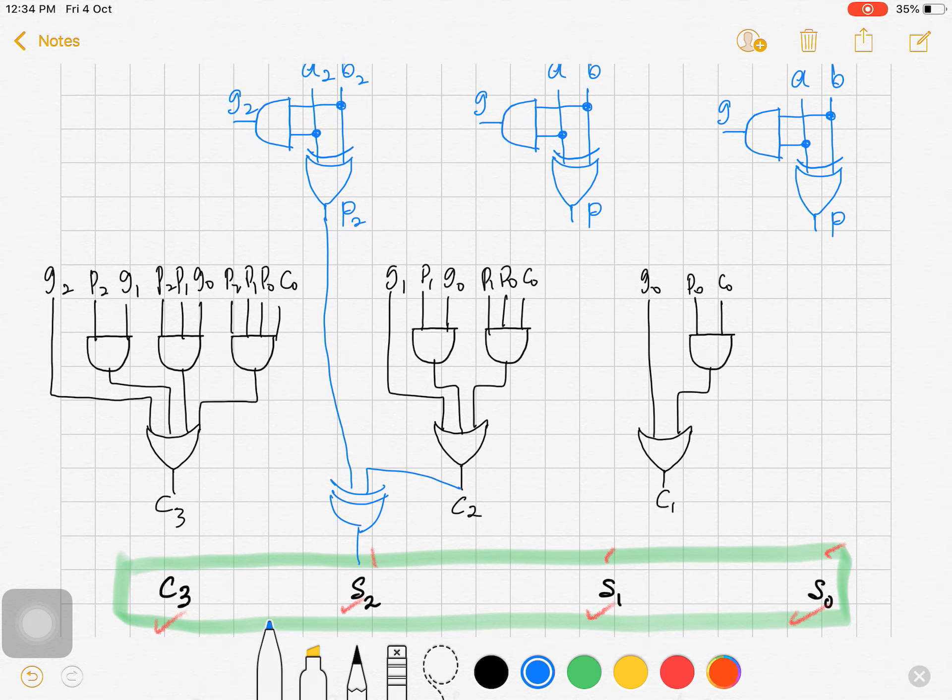To get S1, we require A1, B1, and then G1, and then I require an XOR gate. So P1 XOR C1 equals S1. And this is A0, B0 that produce P0. I require C0, because C0 in fact for adder equals 0. So we XOR this with P0, I get S0, so this is G0.